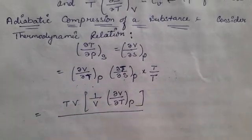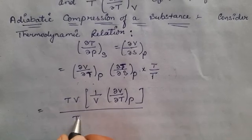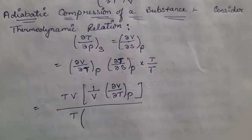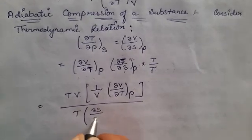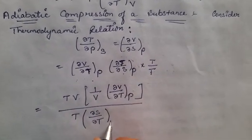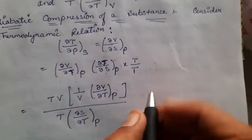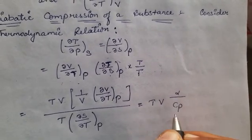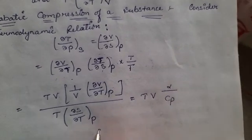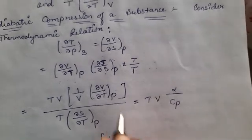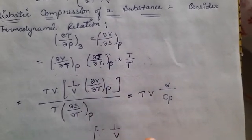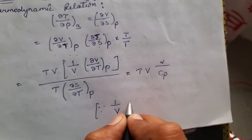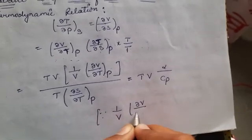We now have T in the denominator. To find the value of specific heat, we reverse the order of this term to get (∂S/∂T) at constant pressure. This gives us Cp. We define (1/V)(∂V/∂T) at constant pressure as alpha, the thermal expansion coefficient.